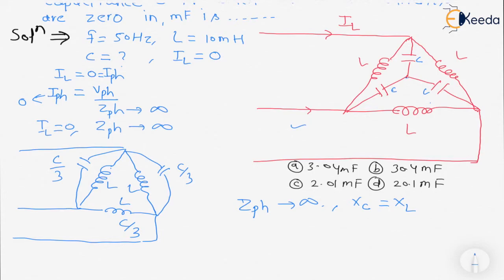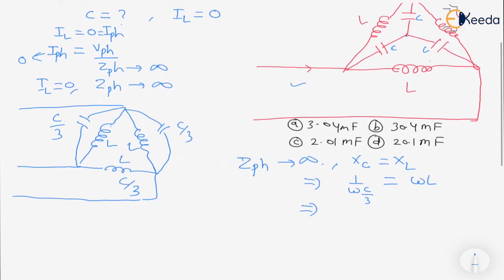From here we can write 1 upon omega C by 3 is equal to omega L. So we can write from here C is equal to 3 upon omega squared into L.